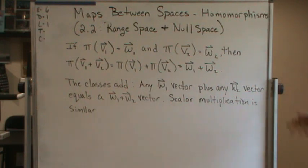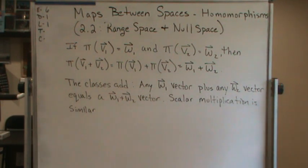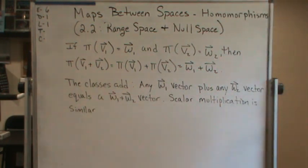which is going to equal the vectors w1 plus w2. And what it is saying is that the classes add, so that any w1 vector plus any w2 vector equals a w1 plus w2 vector. And scalar multiplication is similar.